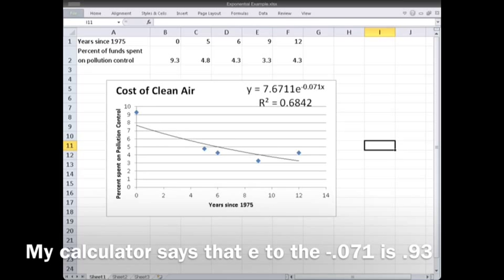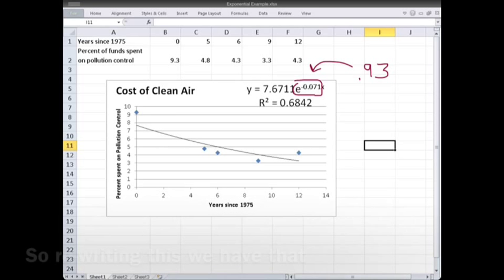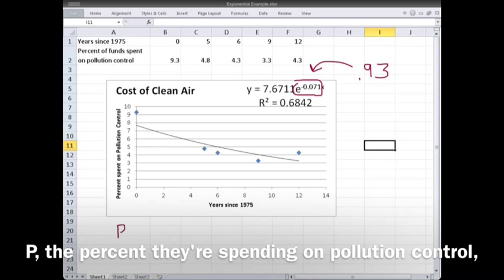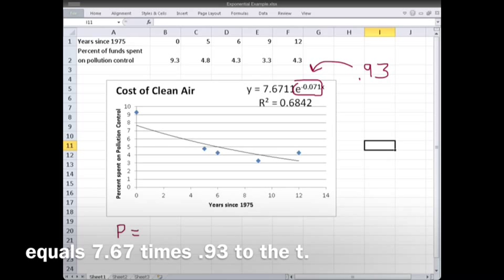My calculator says that e to the minus 0.071 is 0.93. So rewriting this, we have that P, the percent they're spending on pollution control, equals 7.67 times 0.93 to the t.